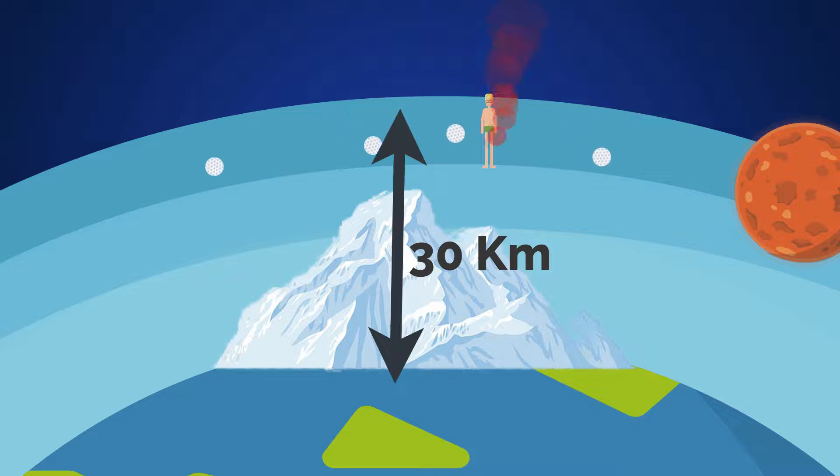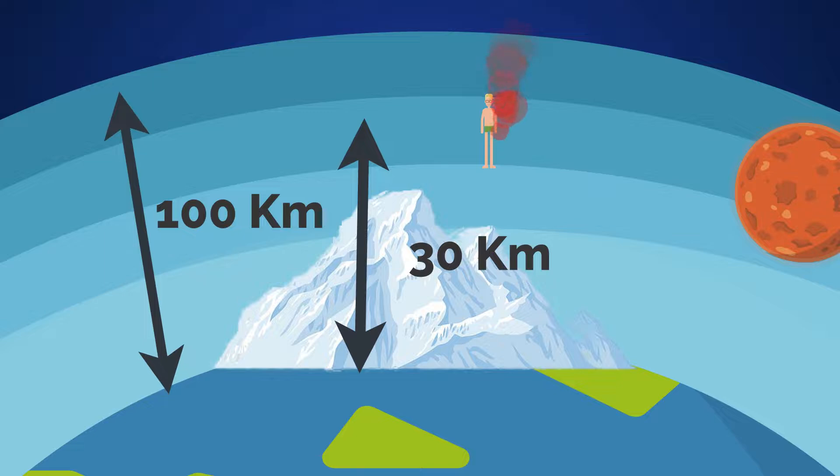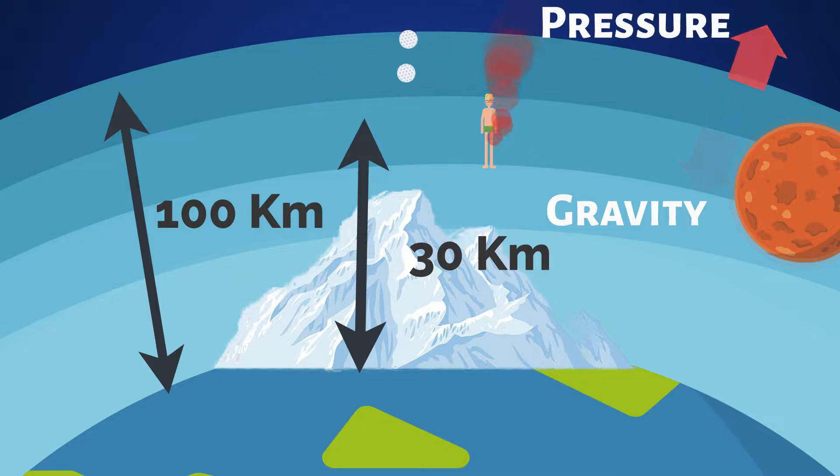There are very few collisions, and the golf balls move much more slowly. Finally, let's move out to 100 kilometers, the beginning of space. There are so few air molecules here, that the golf balls never collide. They're only under the influence of one force, gravity, pulling them down towards Earth. There's not enough pressure to force them out into space.